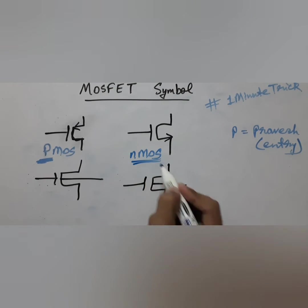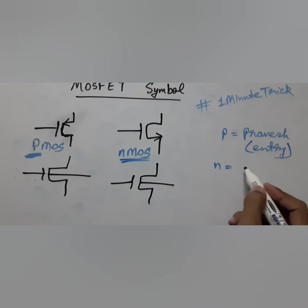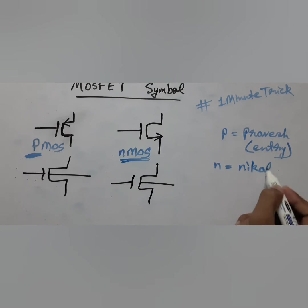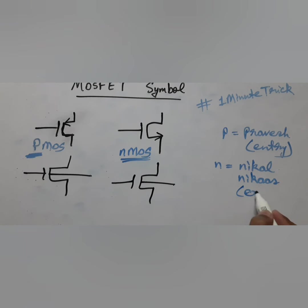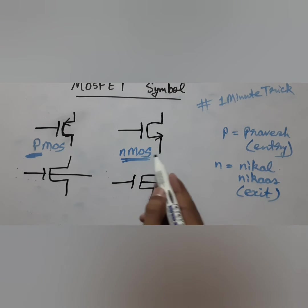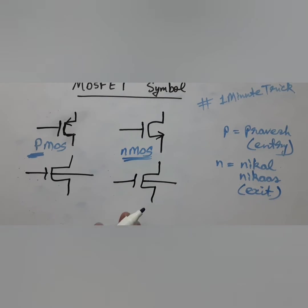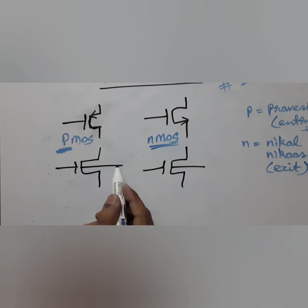Then this is NMOS when the arrow is exiting. So N in Hindi is 'Nikkal' or you can say 'Nikas,' which means 'exit' in English. So this is how you can remember these simple circuits.